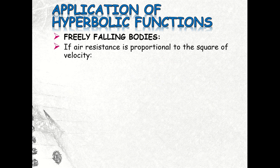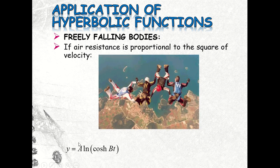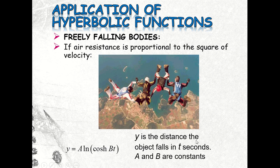We have freely falling bodies: if air resistance is proportional to the square of velocity, the equation used is y = a·ln(cosh(b·t)), where y is the distance the object falls in t seconds, and a and b are constants.